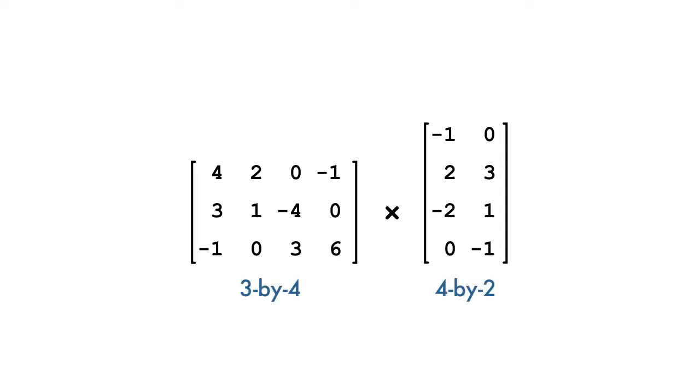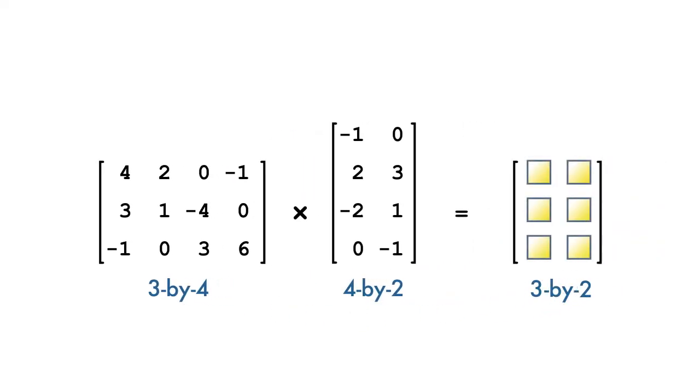First, we need to know if two matrices can be multiplied, and it depends on their dimensions. The number of columns of the left matrix have to equal the number of rows of the right matrix. The resulting matrix has the leftover dimensions, meaning the dimensions that weren't matched up for the multiplication.